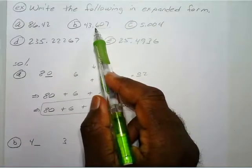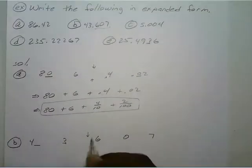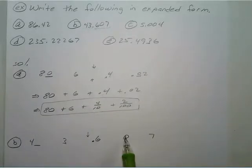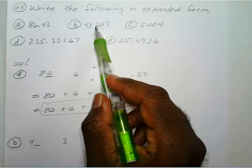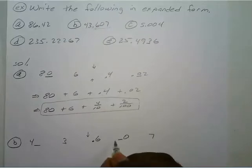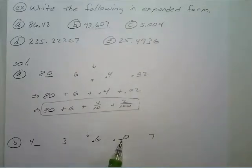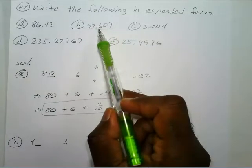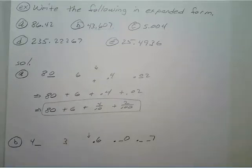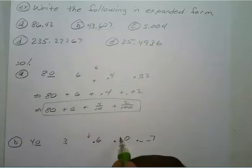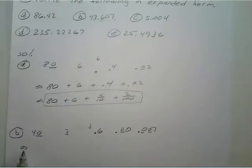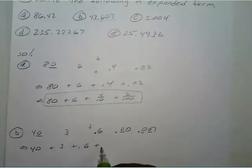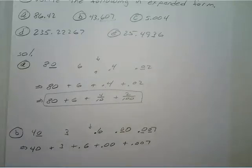The 6 is right next to the decimal so you don't add any places, but you put the decimal point there. The 0 would be one space from the decimal — it'd just be .00 — that's why it's really just a non-zero digit that matters. You can put it there anyway; that's perfectly fine. For the 7, you have two spaces before you get to the decimal. Fill all those spaces with zeros, giving you 40 plus 3 plus 0.6 plus 0.007.